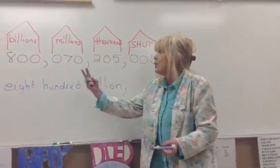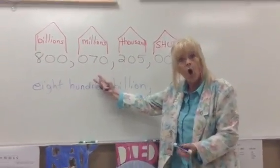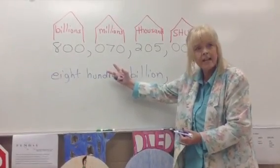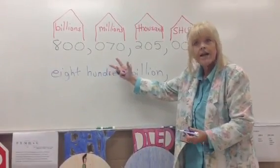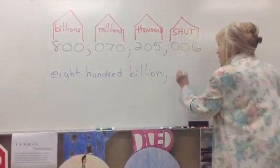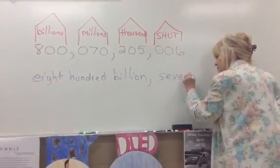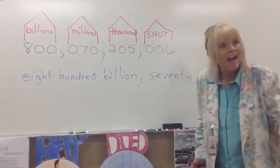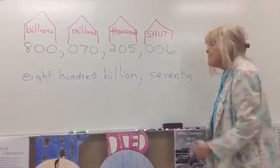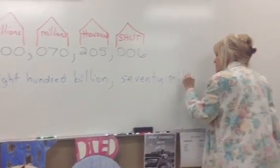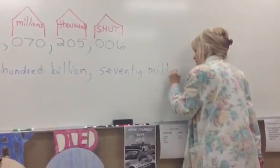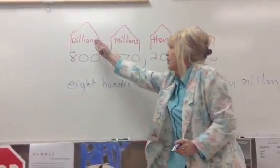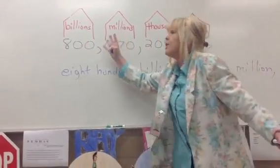Then you say, who's in that house? Seventy. So you write seventy. What's the name of the house? Millions. Seventy million. So far we have eight hundred billion, seventy million.